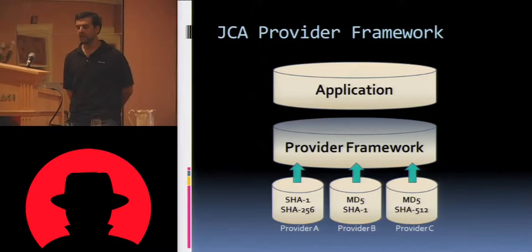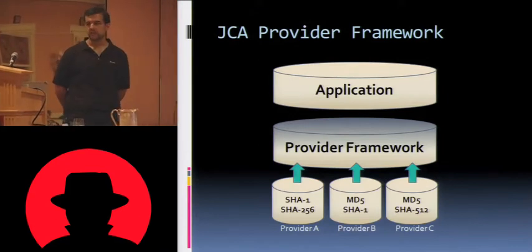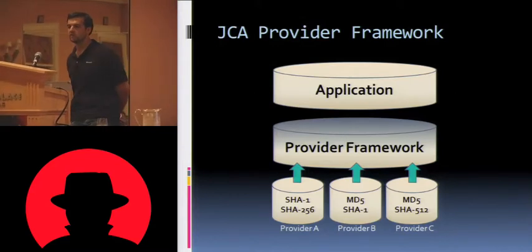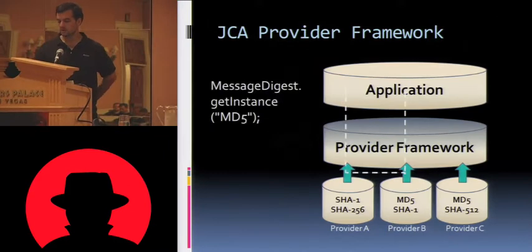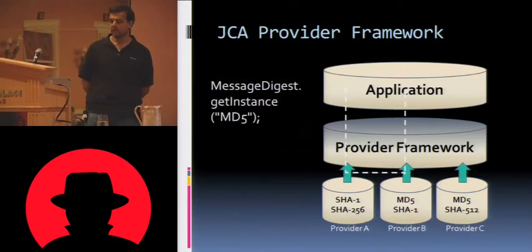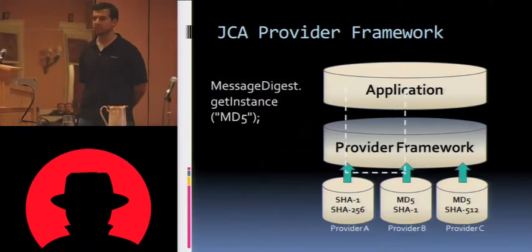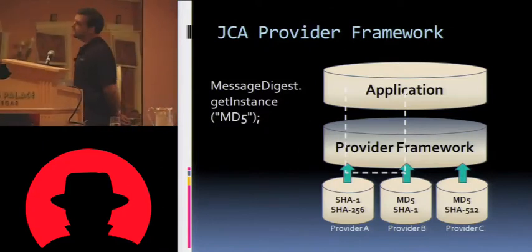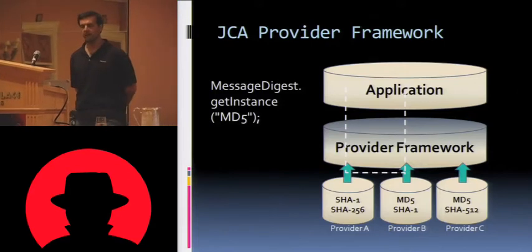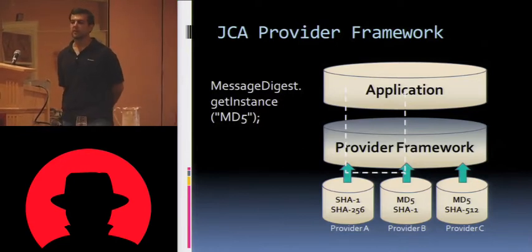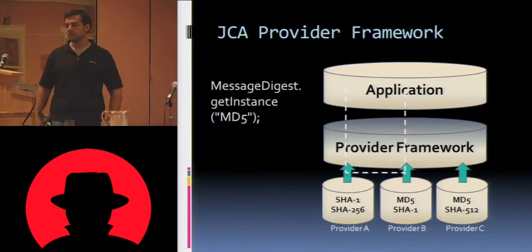We've got three providers in this example. Provider A says it knows how to do SHA-1 and SHA-256. Provider B says it knows how to do MD5 and SHA-1. Provider C says it knows how to do MD5 and SHA-512. When the application goes to the framework and says "message digest, give me an instance of MD5," the provider framework iterates through all registered providers in order. It asks provider A if it knows how to do MD5 — provider A says no. It goes to provider B — provider B says yes. So provider framework instantiates that and returns it to the application.